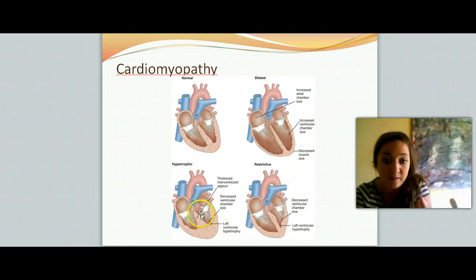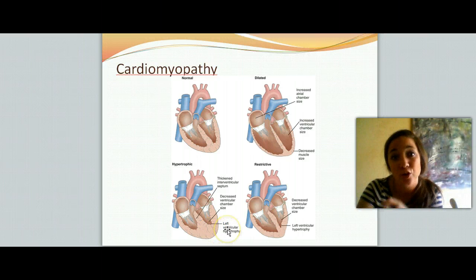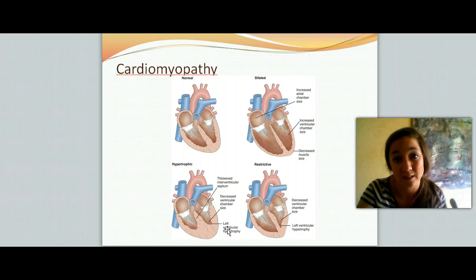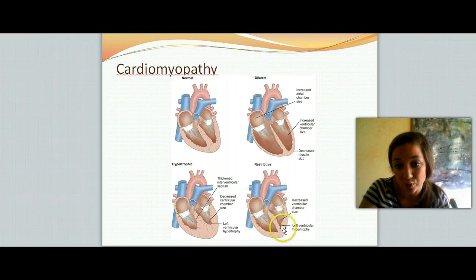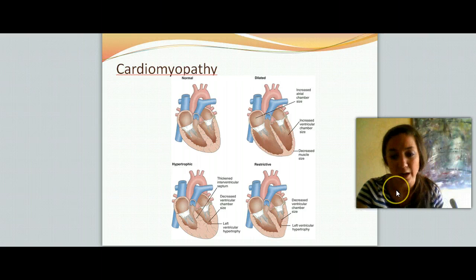Within the ventricle, you have a smaller amount of blood. Strong muscle — great — but a decreased amount of blood, which means when it pumps out, your cardiac output is going to be decreased from what it should be. And then here's restrictive — see how it's restricting right here? It's a decreased ventricular chamber size with left ventricular hypertrophy, just restricting that left ventricle.